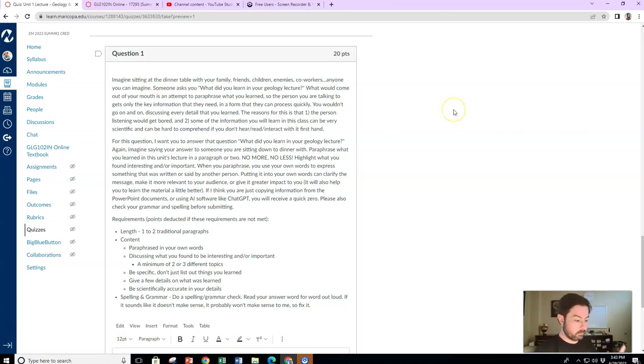Imagine you're sitting down to dinner with family, friends, children, enemies, whoever. And they ask, hey, what'd you learn in your geology lecture that you just watched? Whatever would come out of your mouth, that's what I want. The words that you would use, that's what I want. You're going to summarize and paraphrase. You're not going to go over every single detail because imagine that other person, they'd get bored. If you went on and on and on with all these science details, they've never taken a geology class. They don't know. So what your goal is to kind of summarize and paraphrase some of the things you found interesting or important in a way that someone you're sitting down at dinner with can kind of understand what you're talking about, even though they may have never taken a geology class.